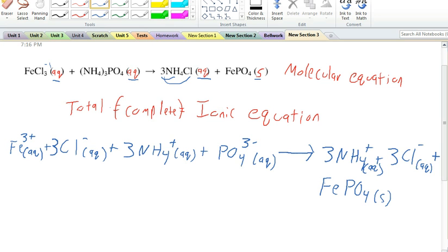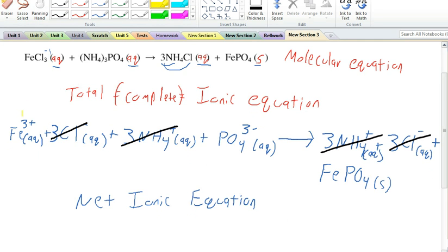In order to determine the net ionic equation, we simply cancel out the items that occur on both sides of the equation. So I can see that I have three chloride ions on the reactant side. So I cancel those out with the three chloride ions on the product side. I also have three ammonium ions in the reactants, three ammonium ions in the products. Those cancel. So I have canceled everything that I could.